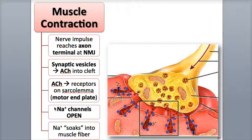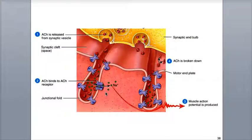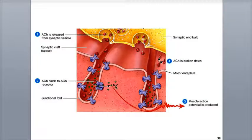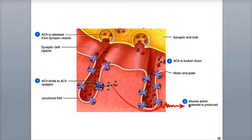Step C is when the channels open. The receptor's ion channel opens as the two acetylcholine molecules bind to it and sodium ions can flow into the muscle fiber. Step S, to finish up your ABCs, is when sodium soaks into the muscle fiber. As the sodium ions flow into the muscle fiber down their electrochemical gradient from a high positive charge to a low positive charge, the inside of the muscle fiber becomes more positively charged. This change in charge from negative to positive is called depolarization.